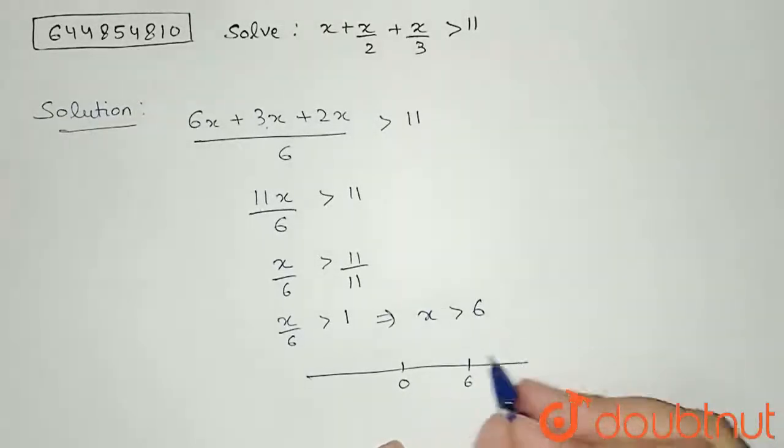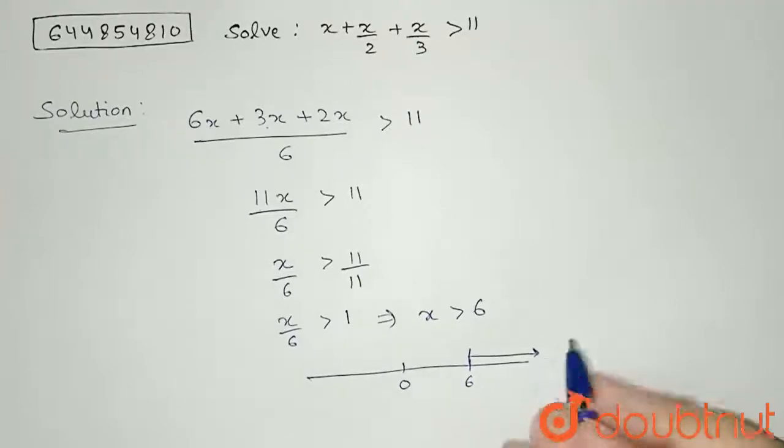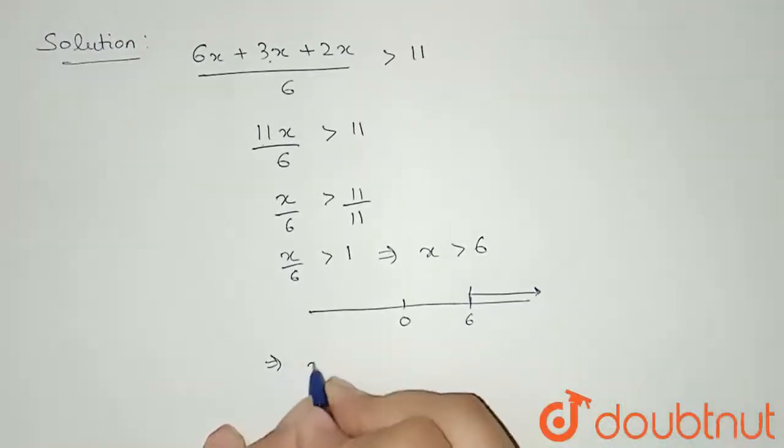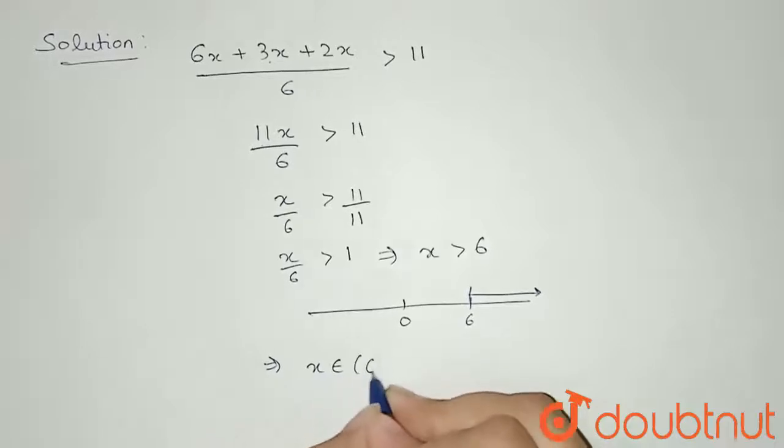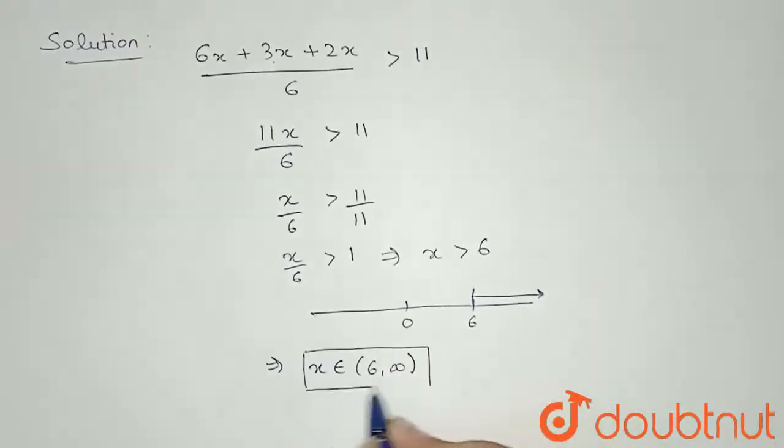is told that x is greater than 6. That means we are talking about this part of the number line. So I can write according to this that x belongs to 6 to infinity. So this x belongs to 6 to infinity